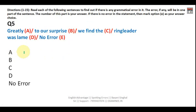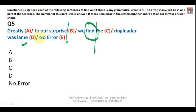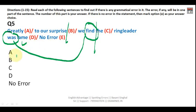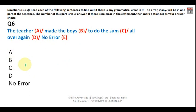Question five: 'Greatly to our surprise, we find the ring leader was lame.' 'Lame' means he was handicapped — his leg was not functioning properly. 'Greatly to our surprise' is correct. However, 'we find' should be 'we found' because the sentence is written in the past tense. Your answer is C.